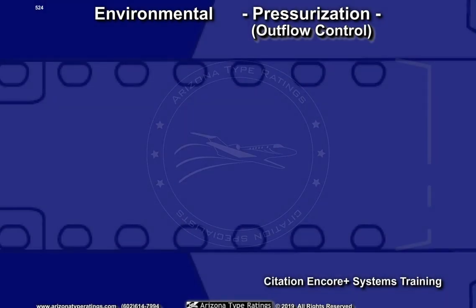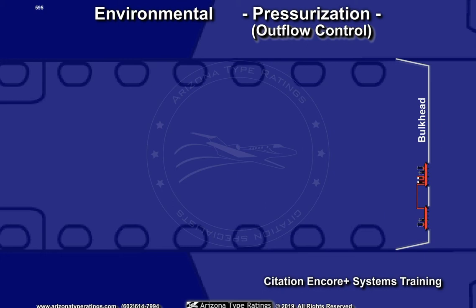The pressure inside the cabin is controlled by two outflow valves, located on the aft pressure bulkhead. These are the primary and secondary outflow valves. These valves control the rate at which environmental air is released from the cabin.